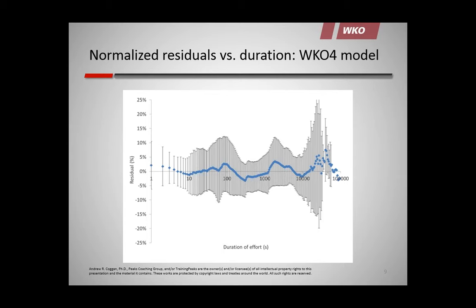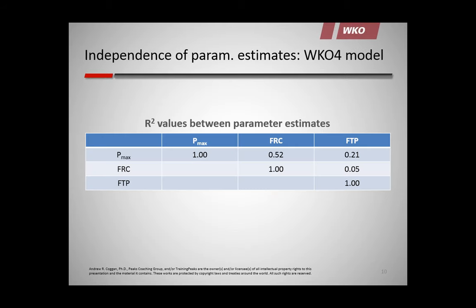In terms of evaluating models, analyzing the residuals — the difference between predicted and observed values, often normalized as a percentage — is very important. In an ideal, unbiased model, while it may sometimes miss slightly high or low, on average it should be centered on zero percent error and normally distributed. Here is a bar graph of the distribution of residuals when the WKO4 model is applied to nearly 200 seasoned athletes — a nice Gaussian-shaped curve centered on zero percent, with a mean absolute error of 3.2% ± 2.8%.